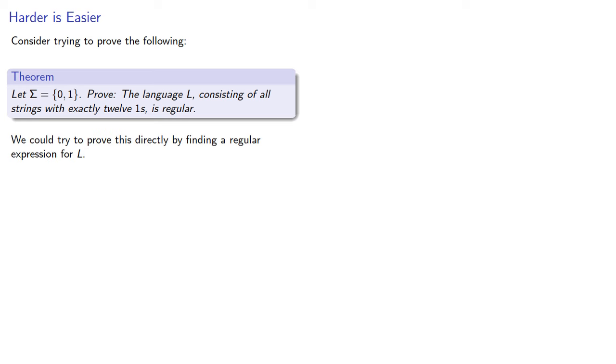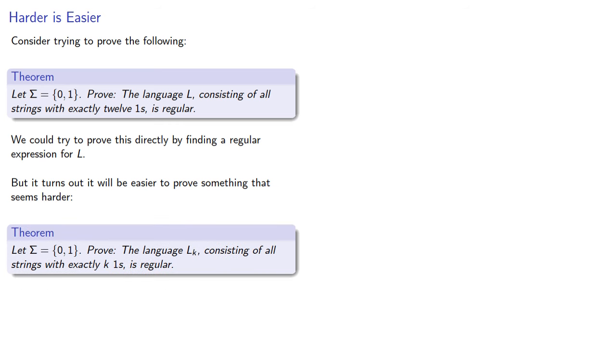We could try to prove this directly by finding a regular expression for L, but it turns out that it will be easier to prove something that seems to be harder: that if our symbol set is 0 and 1, the language LK, consisting of all strings with exactly K ones, is regular.